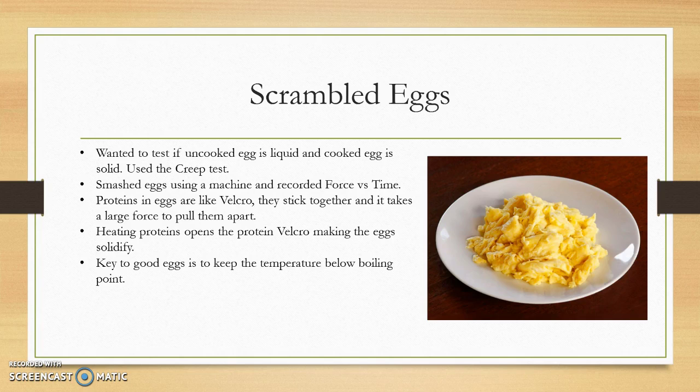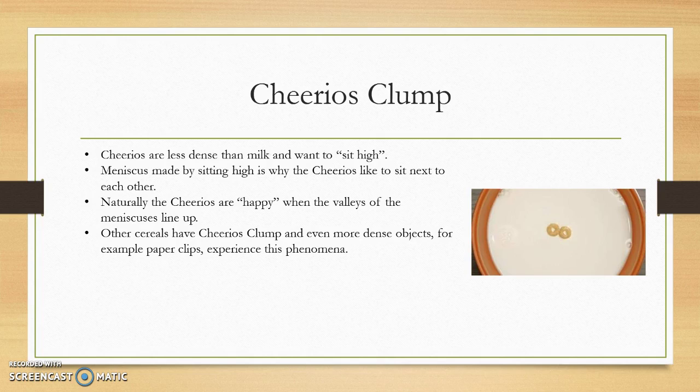The last topic discussed in the lecture was Cheerio clumps — the phenomenon where Cheerios are always attracted to each other in milk or water. If Cheerios were on opposite sides of the bowl, eventually they would come together. The reason is that Cheerios are less dense than milk, so they sit high up on the milk surface.